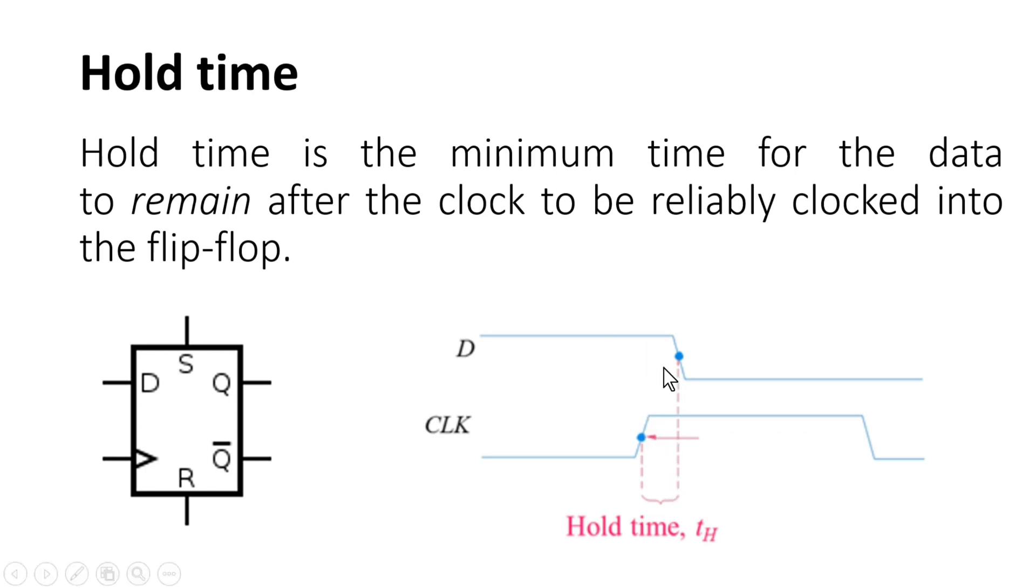If we don't follow the hold time and we vary our D input somewhere here in the time domain, this will cause our flip-flop to go into metastable state and we won't be sure the value of Q after the clock edge. It can be logic 0 or logic 1 independent of the value of D.